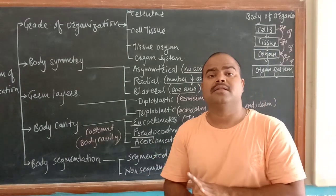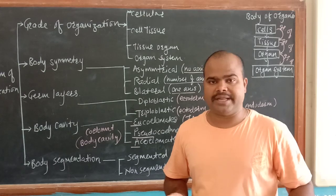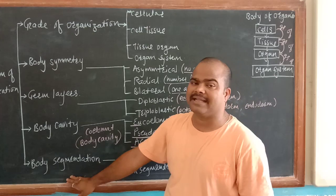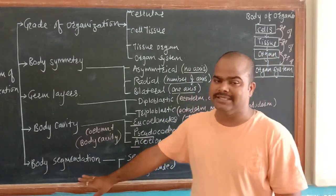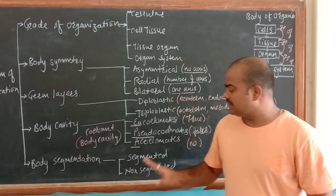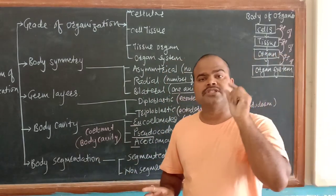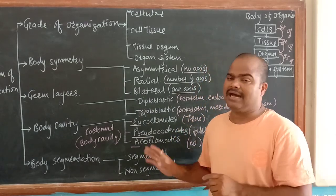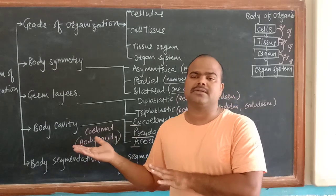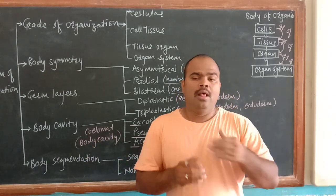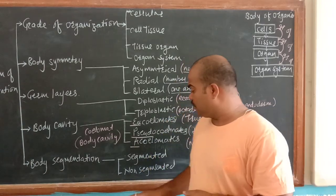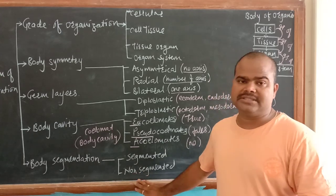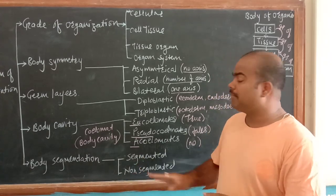Those are the four criteria, and the fifth criteria is body segmentation. Segments are small similar units. These small similar units are seen in some animals and not in other animals. They are categorized under two criteria: segmented and non-segmented.